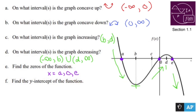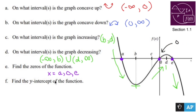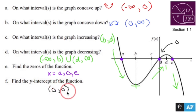And last but not least, find the y-intercept of the function. That's where the line crosses the y or f(x)-axis, and since it crosses the origin, the y-intercept is going to be 0. So to be specific, it's the point (0, 0), the origin.